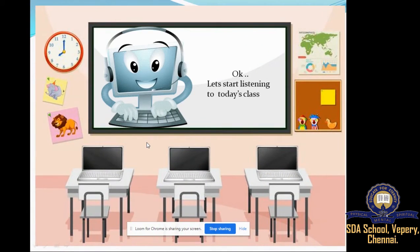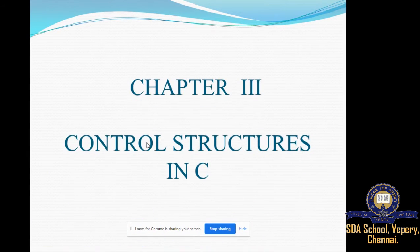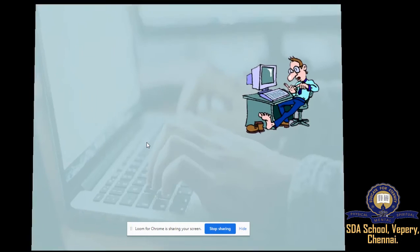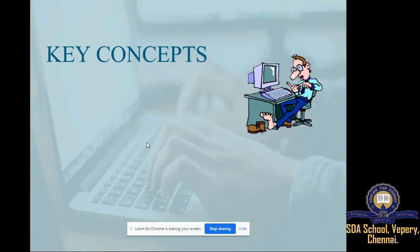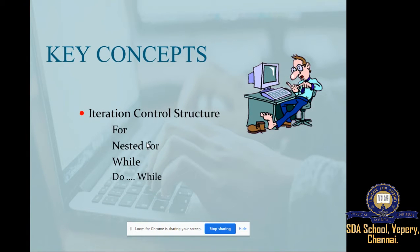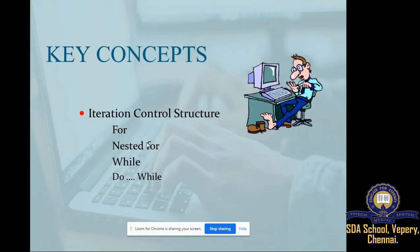Now let's start today's class. This is chapter 3, control structures in C. Today's key concept is the third type — the iteration control structure. We have already studied sequence, which is step by step, and selection, which executes based on a true or false statement. The third is iteration control structure. The types are: for, nested for, while, and do-while.